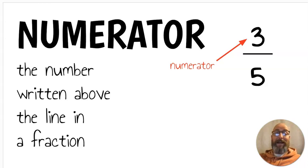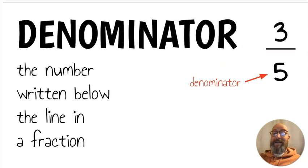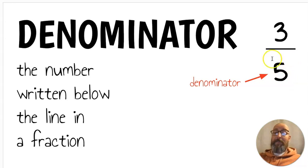Next let's move to fractions. The numerator is the number written above the line in a fraction. The denominator is the number written below the line in a fraction. So in a fraction, the numerator is on top and the denominator is down below.